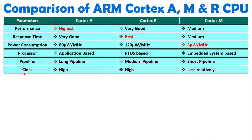Clock speed also defines performance — the higher the clock, the higher the execution speed. Cortex-A has a high clock frequency. Cortex-R also has a high clock, but Cortex-M operates at a relatively lower clock frequency.